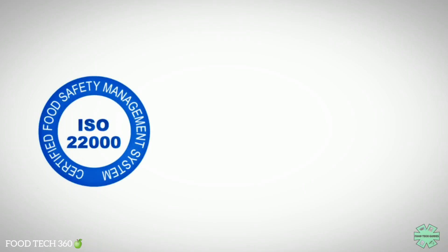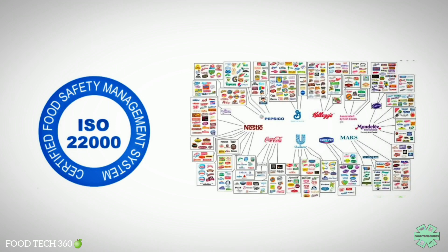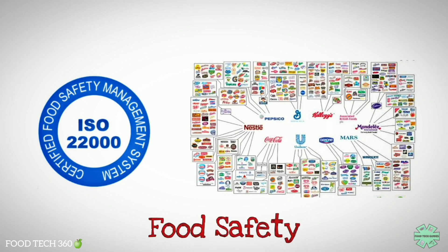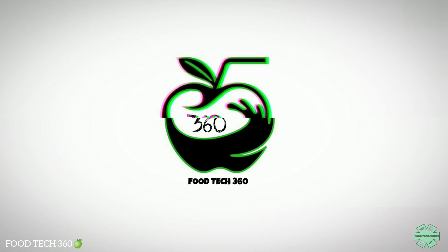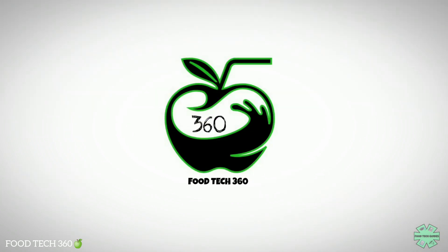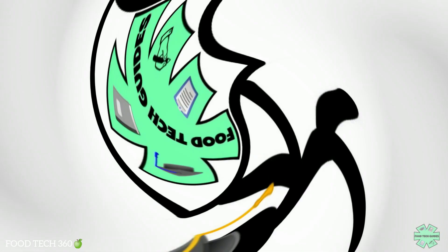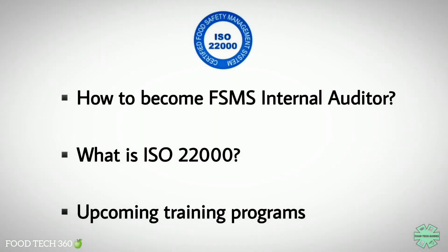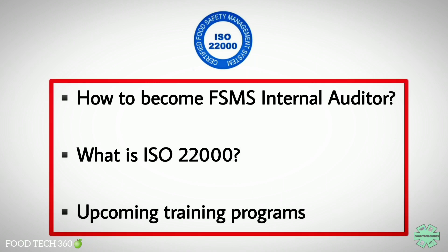The adoption of a food safety management system is a strategic decision for an organization that can help to improve its overall performance in food safety. Hello friends, welcome back to our channel FoodTech360 and you are watching FoodTechGuides. In this video we will guide you on how to become an FSMS internal auditor, what is ISO 22000, and what are the upcoming training programs.